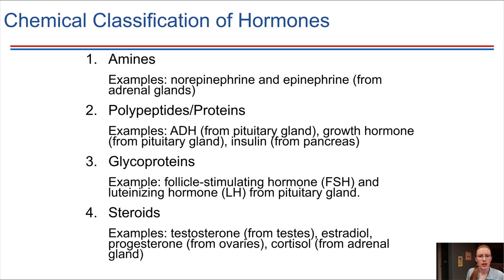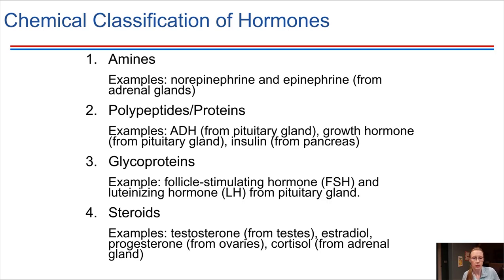Hormones can be classified a couple of different ways. We can classify them based on their chemical structure, and based on that classification there are four major categories. First, amines — we've seen these before as neurotransmitters. Amines are derived from amino acids, specifically tyrosine and tryptophan. Second, polypeptides and proteins, which are larger molecules consisting of multiple amino acids connected together. Examples include antidiuretic hormone, and we'll see growth hormone and insulin in this chapter in more detail.